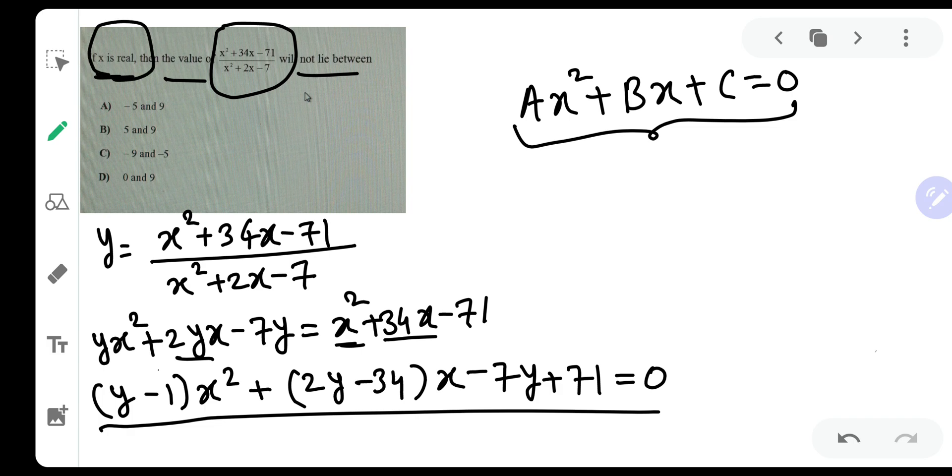Now x is real means what? x is real means this quadratic equation has D greater than or equal to 0. Because if D is greater than 0 then it will have real roots and if D is equal to 0 then it will have real and equal roots. D less than 0 condition is followed when it has imaginary roots.